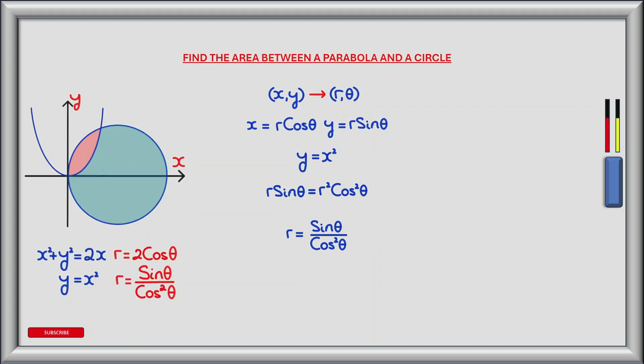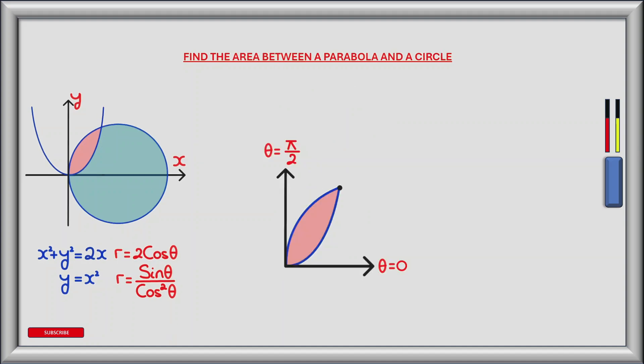Now that we've found the radial distance r for the circle and parabola, let's look at the behaviour of r as we use it to compute the region shown in red. As r rotates in a counterclockwise direction between theta equals 0 and theta equals pi by 2, where theta is the angle r makes with the x-axis, the radial distance covering the area shown in red is first determined by the parabola. This continues until the parabola intersects with the circle at some unknown angle of theta, at which point the area is determined by the circle until the area is complete at theta equals pi by 2.